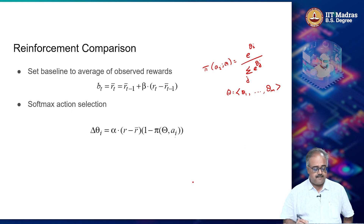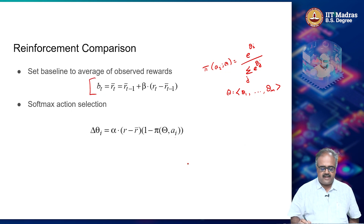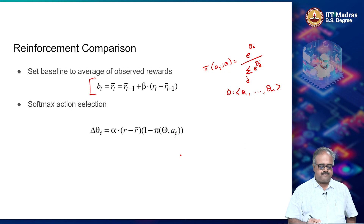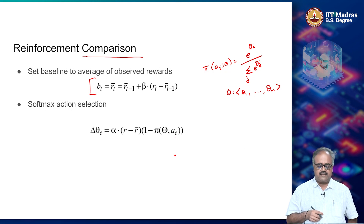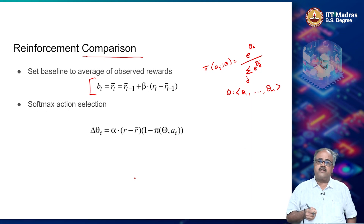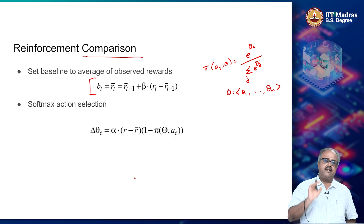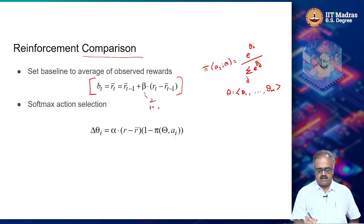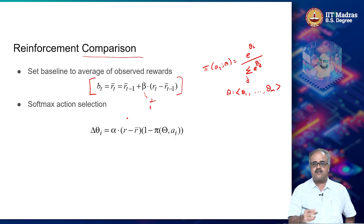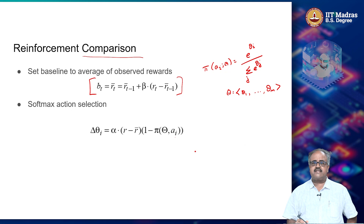I will assume the baseline is given by the average of observed rewards, r̄. This goes back to an algorithm called reinforcement comparison: you maintain an average of all rewards received so far, and if the current reward is higher than average you increase the probability of the action; if lower than average, you decrease it. The baseline update β can be 1/(t+1) for a true average or a constant for a recency-weighted moving average.